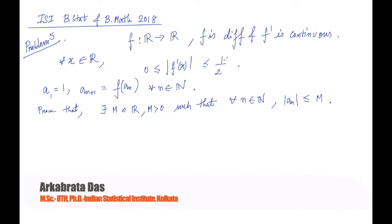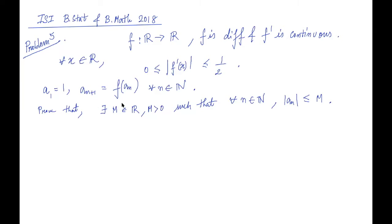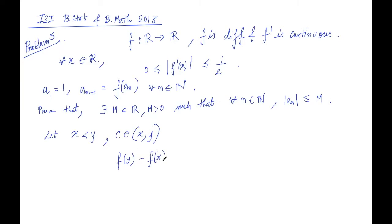The question is how do we attack this problem. We see that f is differentiable and the condition on |f'(x)| is given. How do we relate those things to this sequential criteria? The best way is by the Mean Value Theorem. So let x be less than y. We have an interval (x, y) and a point C within that interval such that f(y) - f(x) = f'(C) · (y - x).